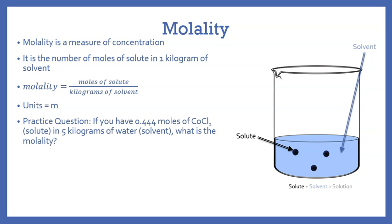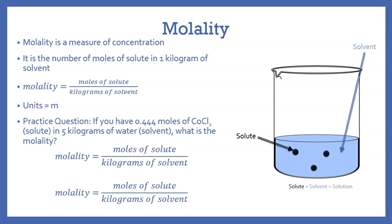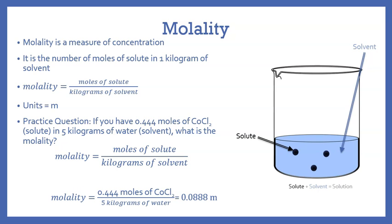So let's look at a practice question. To do this practice question, we need our equation, and then we need to determine how many moles of solute and kilograms of solvent we have. We find our moles of solute and plug it in, then we find our kilograms of solvent and plug it in. Then we solve, and we find the molality is 0.0888 — and the unit has to be a lowercase m.